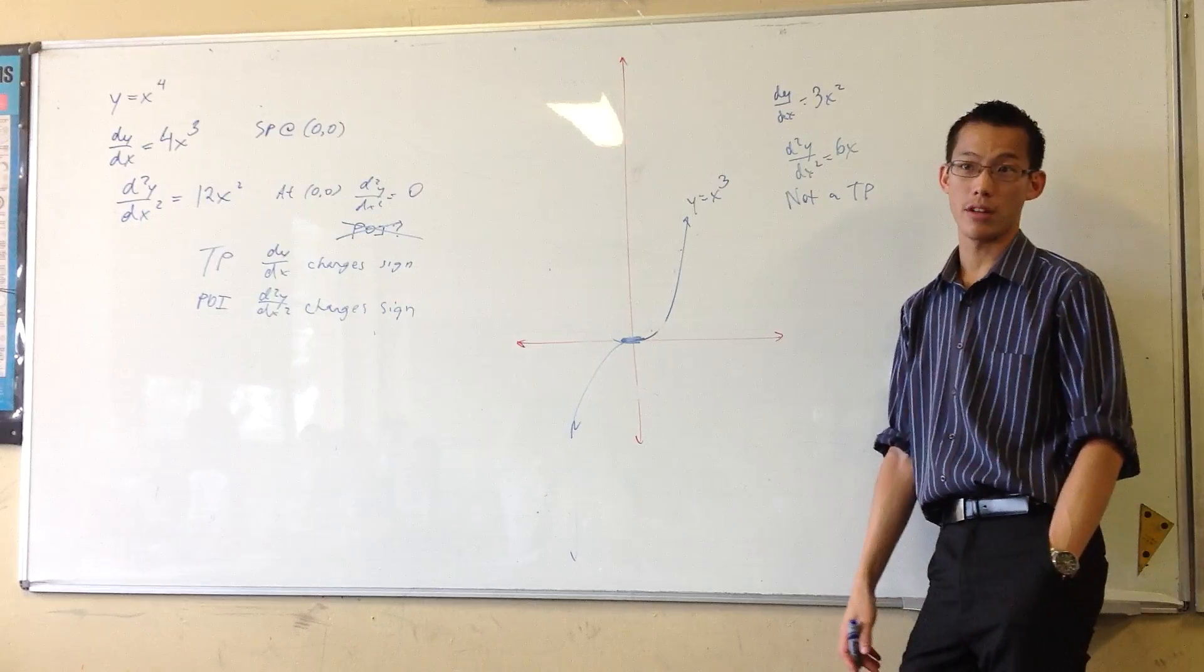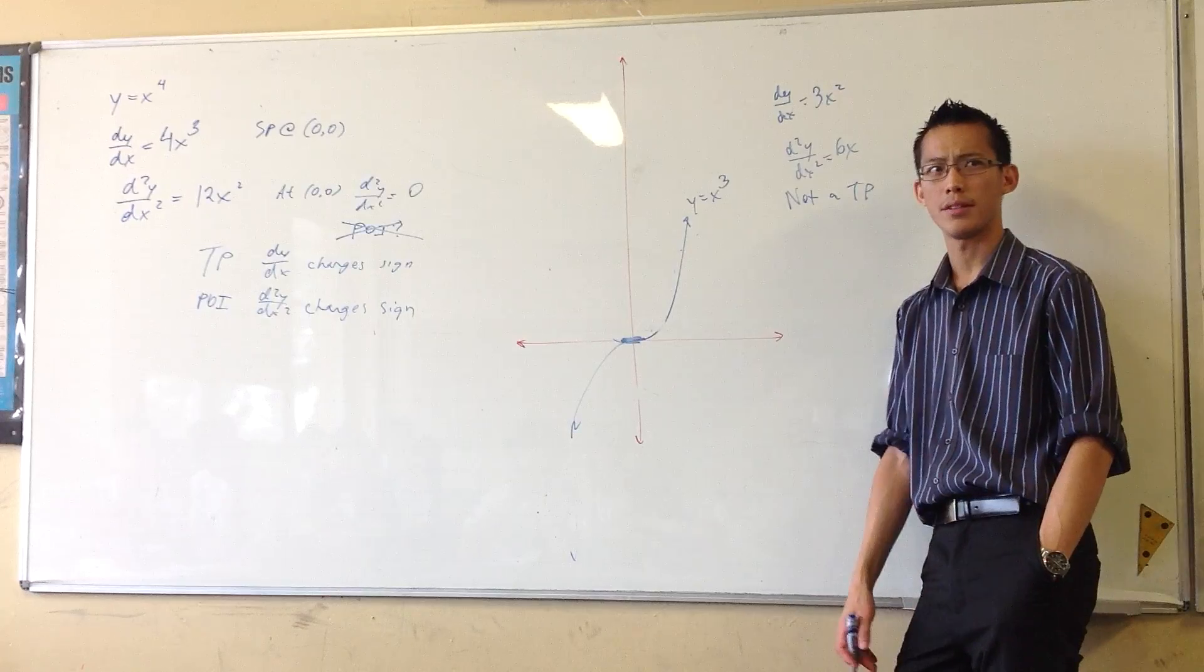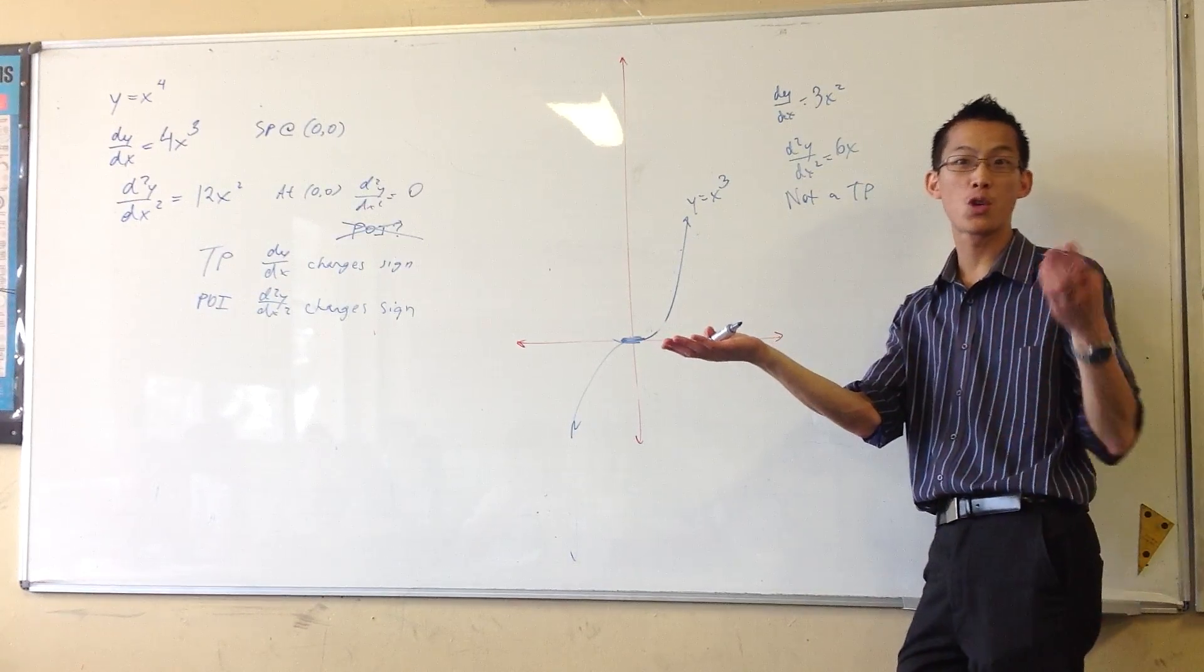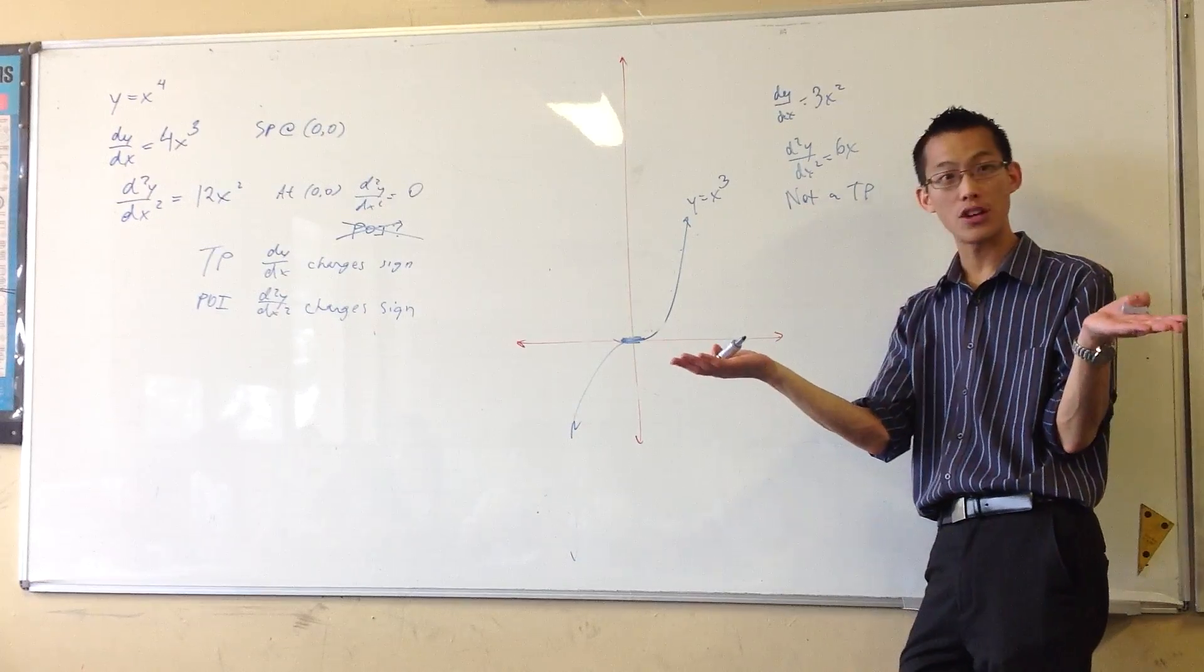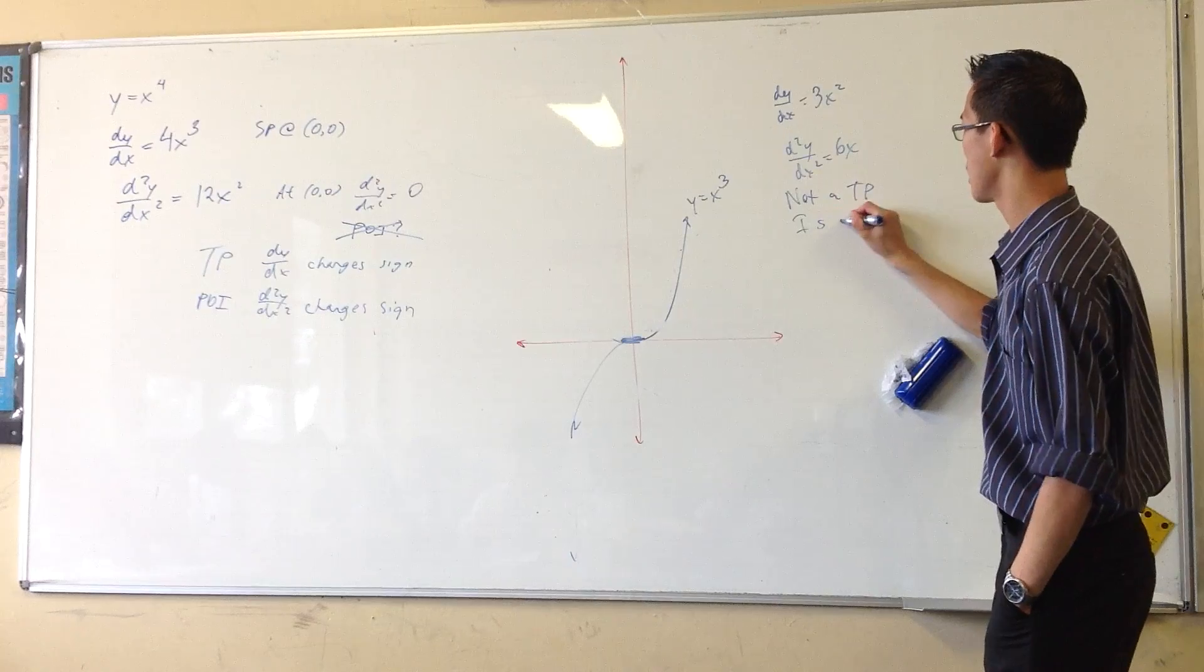Is it a stationary point? What's the definition for a stationary point? Derivative of zero? Or you could say the tangent at that point should be horizontal. And that checks out, right? So, it is a stationary point.